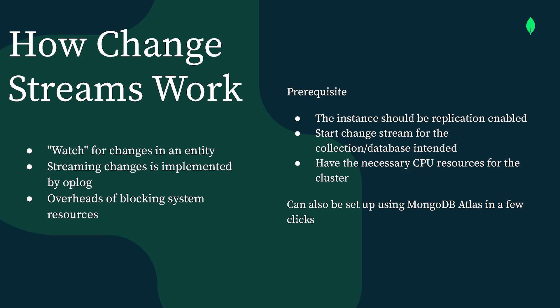Now let's understand how Change Stream actually works. On the entity where you want to apply Change Stream, you will be watching for any changes. In the background, a thread is assigned to continuously monitor that entity for any changes, and then you can apply triggers or actions on top of that watch so that the required use case can be performed. The overhead here is that since a thread is in action, you would require some CPU resources to be allocated, so you have to plan your Change Stream application to be able to consume the CPU required.